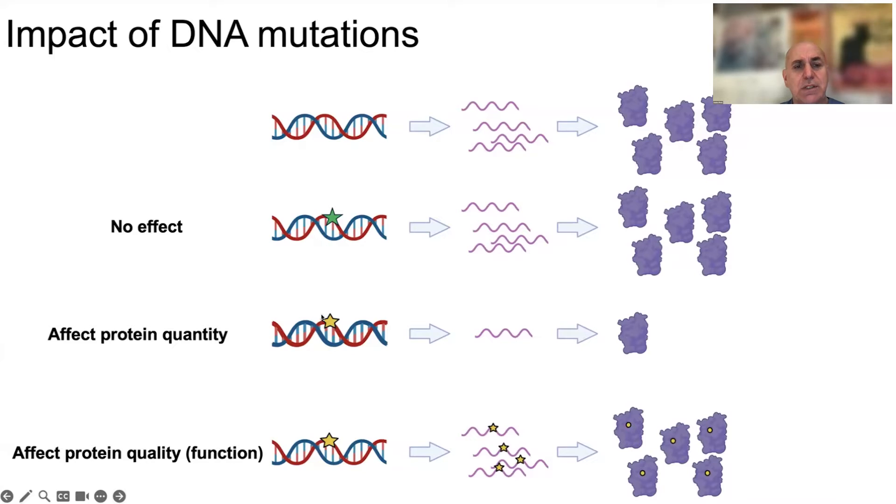As I say, the majority of them have no effect at all. Some of them, however, affect protein quantity, the amount of RNA and therefore reduced amounts of protein, while others affect protein quality or the function of the proteins. You can imagine how deconvoluting this becomes relatively straightforward once you have also transcriptomic information about the impact of the mutation on the DNA.